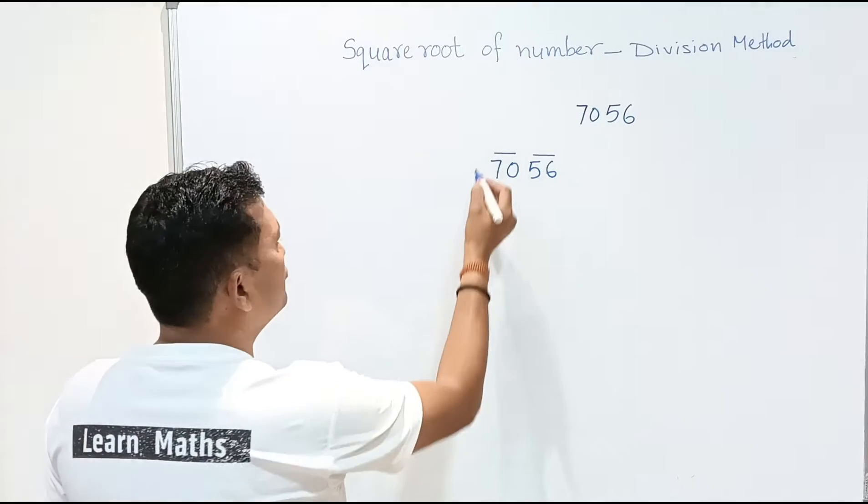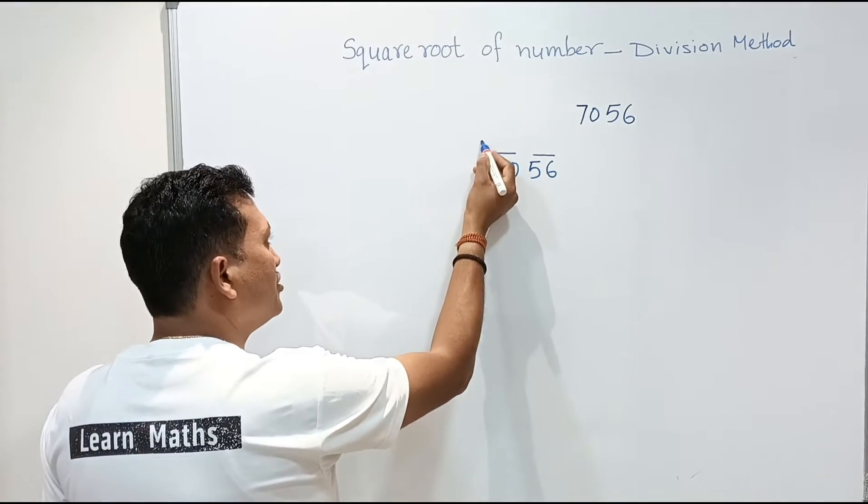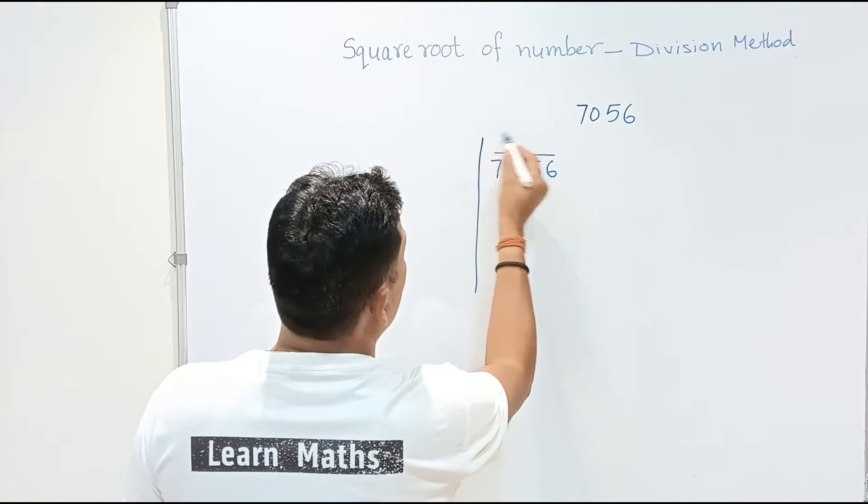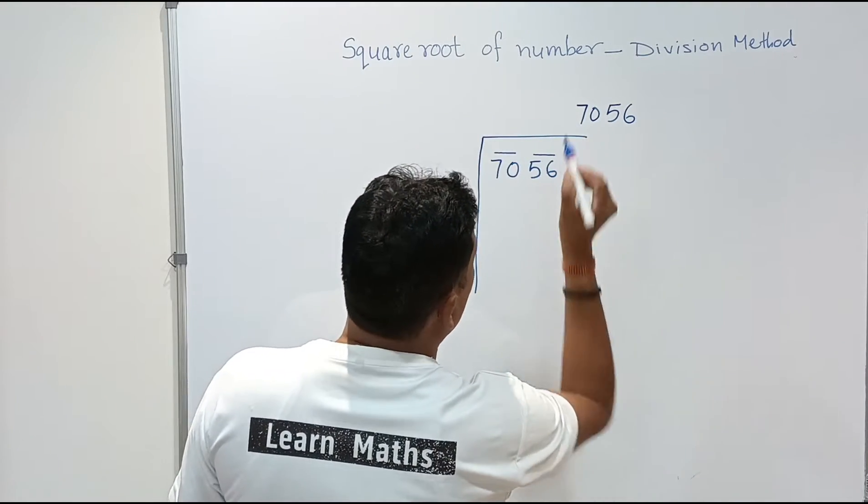Now we need to draw one vertical line left side of this number like this and one horizontal line just above the number.